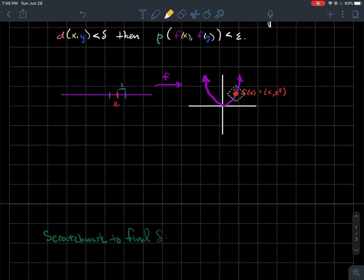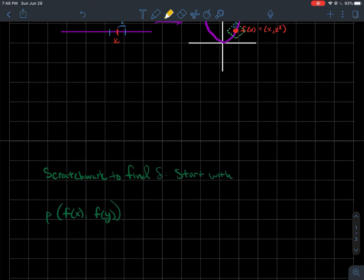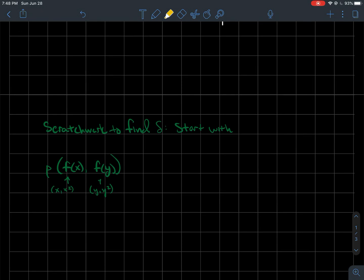So typically what we'll do is we'll do some scratch work to find delta, where we'll typically start with this statement here. I want the distance between the outputs over here to be less than epsilon, so let's actually play with what this formula is and remember what rho actually does in this example. So we'll start with rho f of x comma f of y, and remember what these two points are. Remember what f does. f takes the point x and it takes it to the ordered pair x comma x squared. Similarly, f of y should be y comma y squared. Now if I take the distance between these two ordered pairs, remember I take the difference in the first coordinates plus the difference in the second coordinates. So again, that's the taxicab metric.